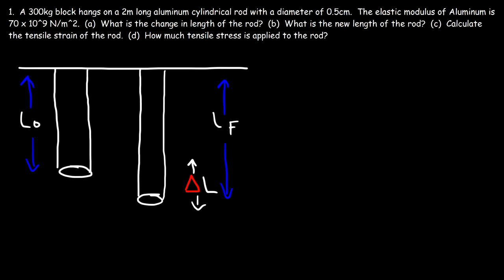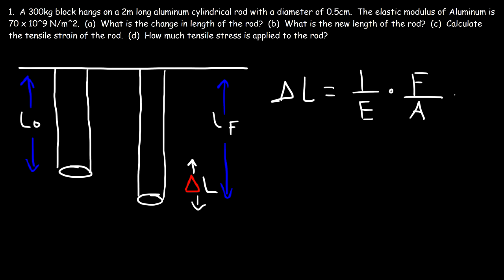The formula that we need is this one: delta L is equal to 1 over E, where E is the elastic modulus or Young's modulus of aluminum, times the force divided by the area, multiplied by L initial.